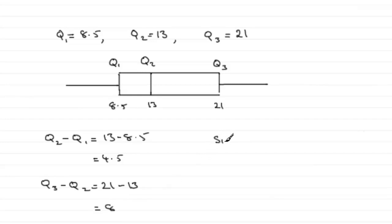So we can see that since the width Q3 minus Q2 is greater than the width Q2 minus Q1, then this gives us what we call positive skew.